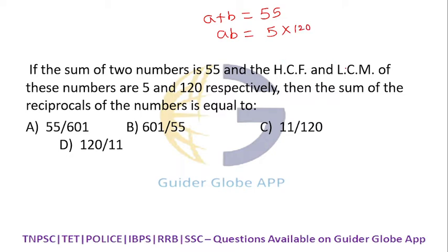We need to find the sum of reciprocals: 1/a + 1/b. Taking LCM as ab, this equals (b + a)/ab.